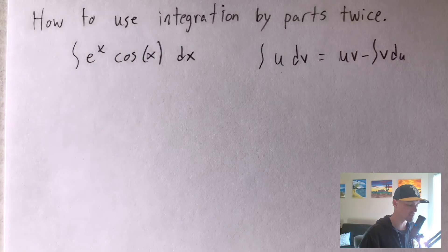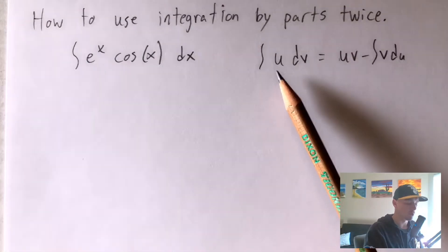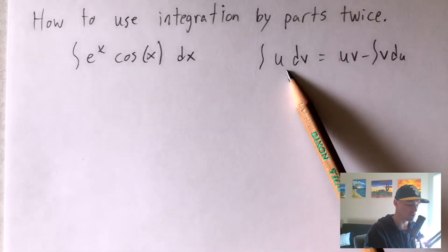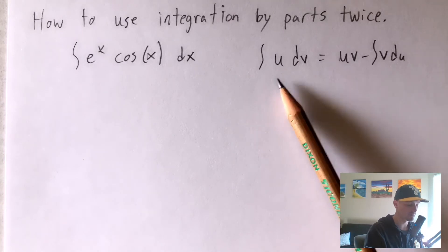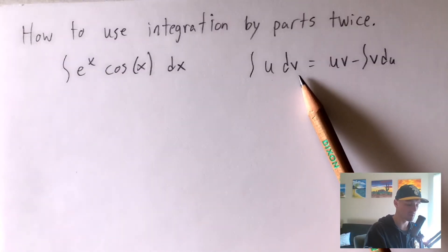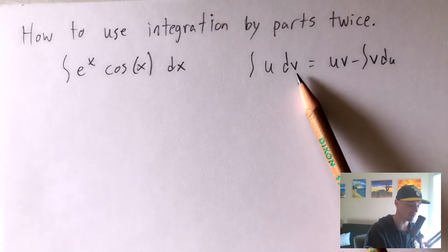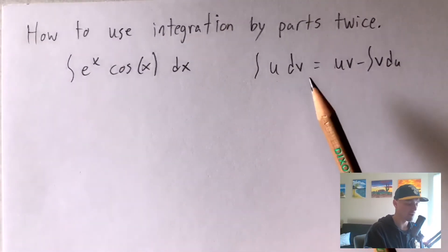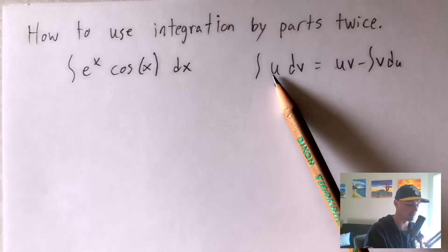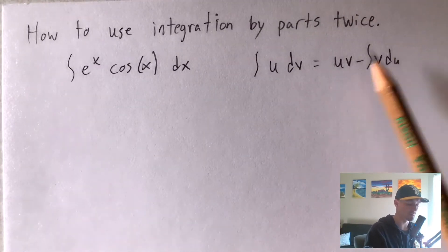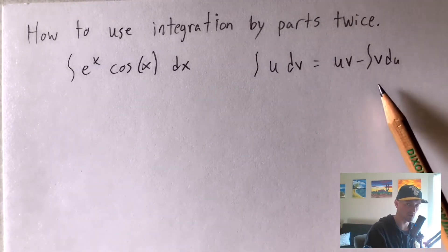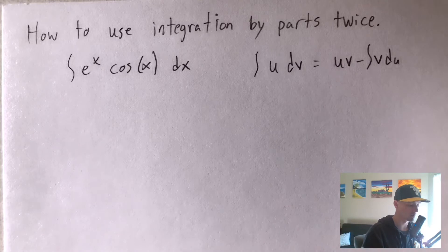You want to pick your u to be something that's easier to take the derivative of, and your dv to be something that's easier to take the integral of, because we're going to have to take the derivative of u and the integral of dv and reuse those pieces in our formula.